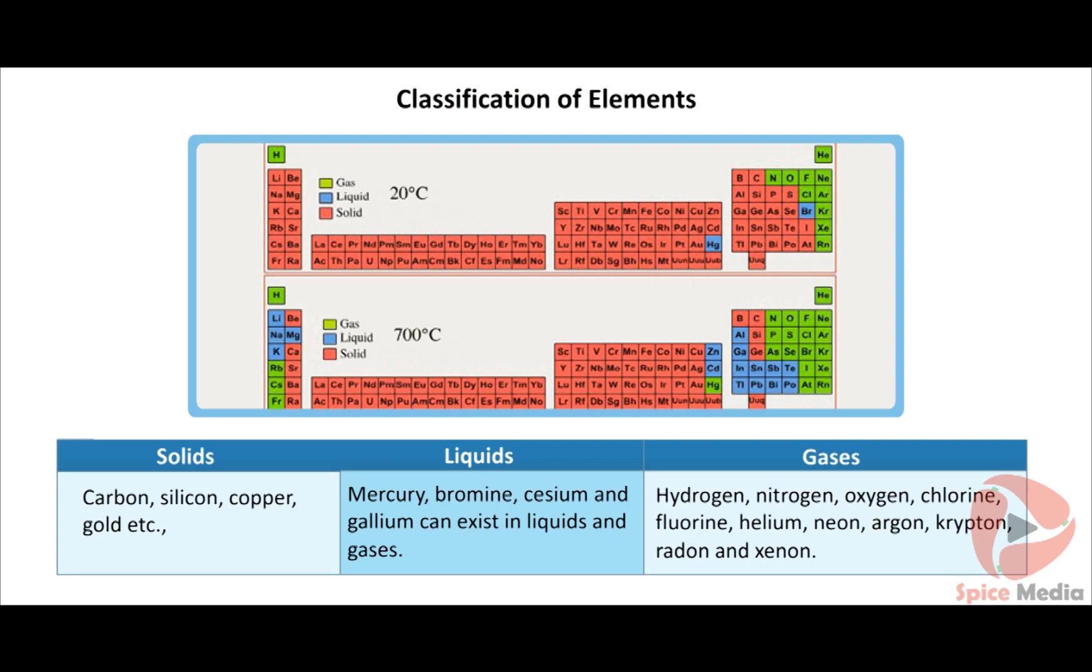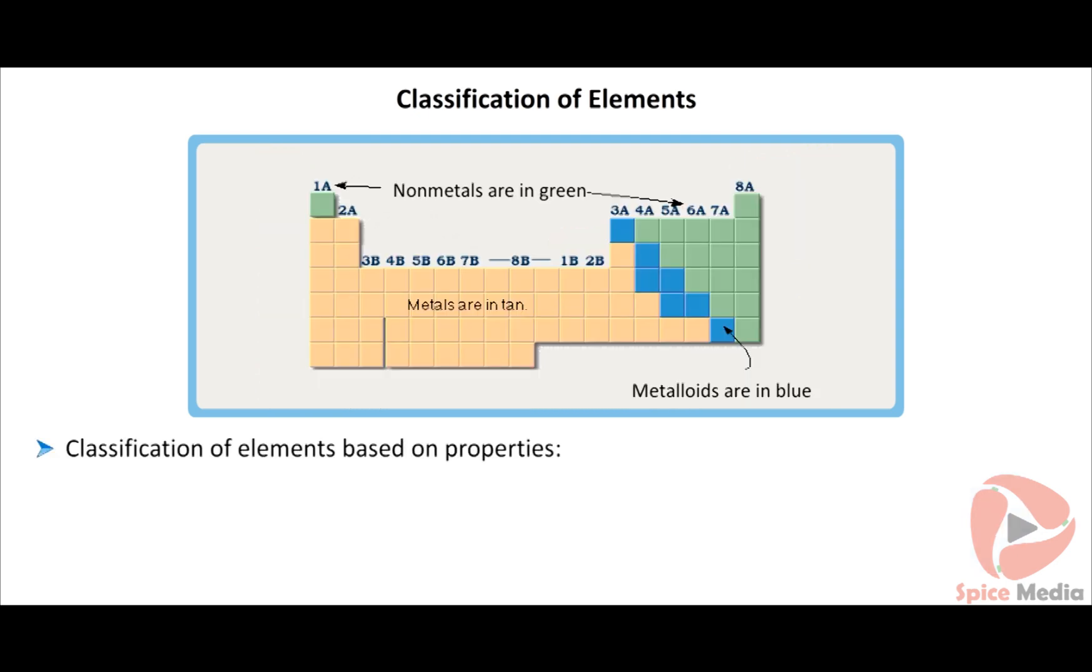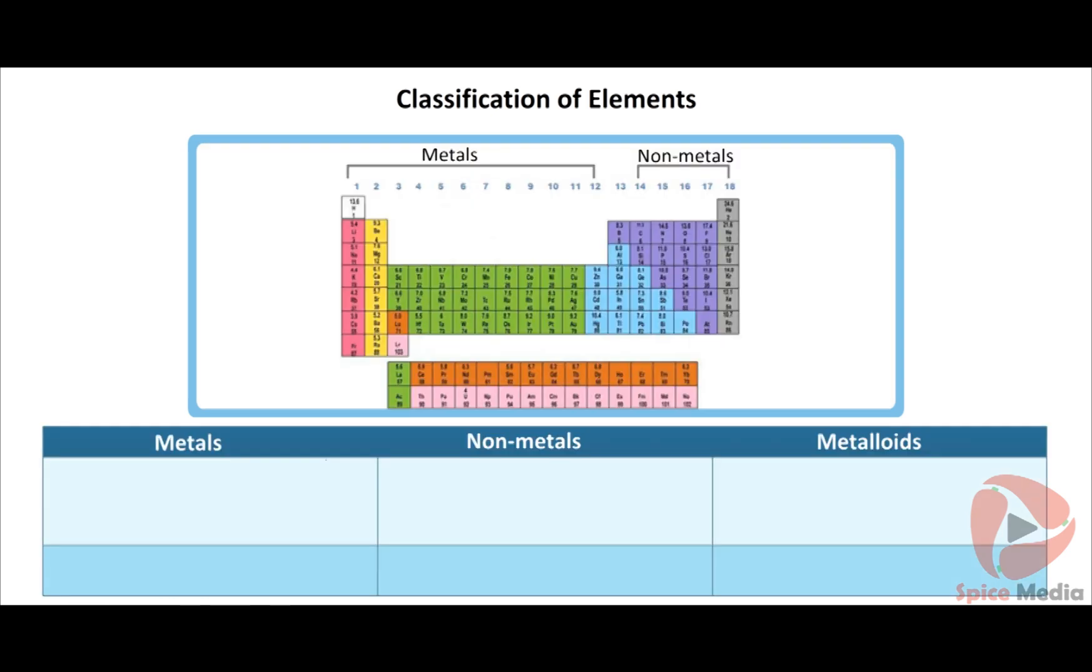Classification of elements based on properties. They are metals, non-metals and metalloids. Metals: Of the 92 natural elements, 70 elements are metals. Metals are hard, lustrous, shining in appearance, malleable, can be beaten into very thin sheet, ductile, drawn into wire, good conductors of heat and electricity, and sonorous, producing sound. Examples: copper, gold, silver, iron, etc.